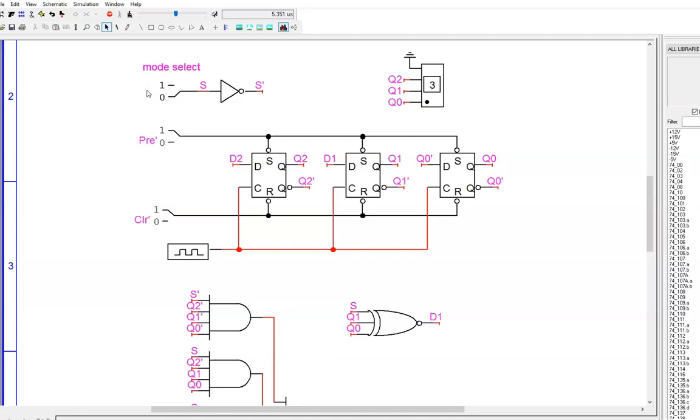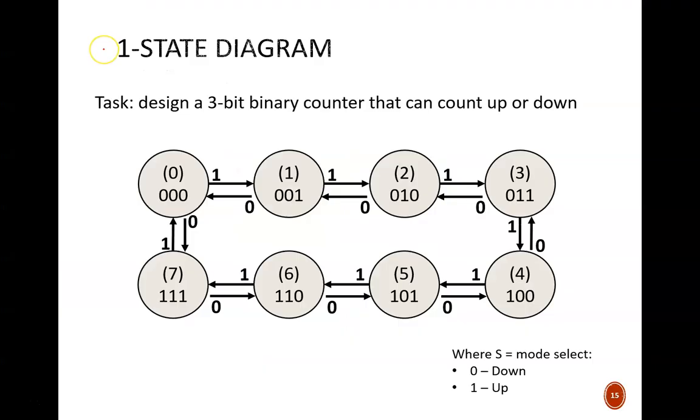This is called a counter with mode control. The modes I chose are either count up or count down by one. Other modes could be designed, such as count by one or count by two, but this is a sufficient example to illustrate how we can build mode control into counters.